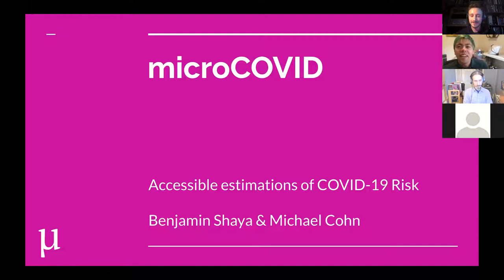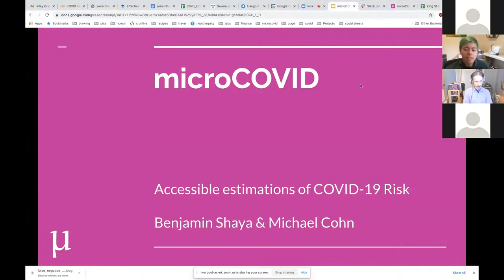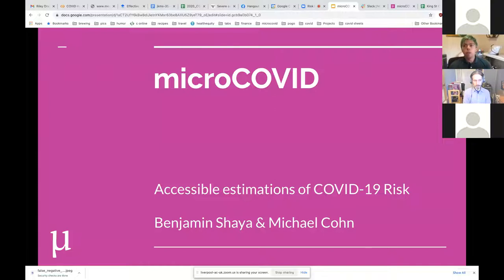Thanks for the introduction. My name is Ben Shire and I'm going to be talking about how we built a model for COVID risk at MicroCOVID — why we built a model despite having a lot of uncertainty, how we try to use our model to reduce uncertainty for people, and how we cope with and present our own model's uncertainty.